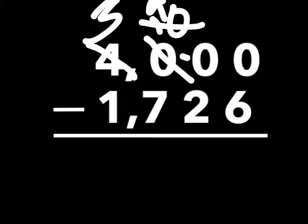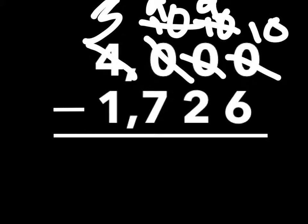First, you have to cross out the 4, change it to a 3, to 10, 9, into a 10, and a 9, into a 10, and a 9, whatever.